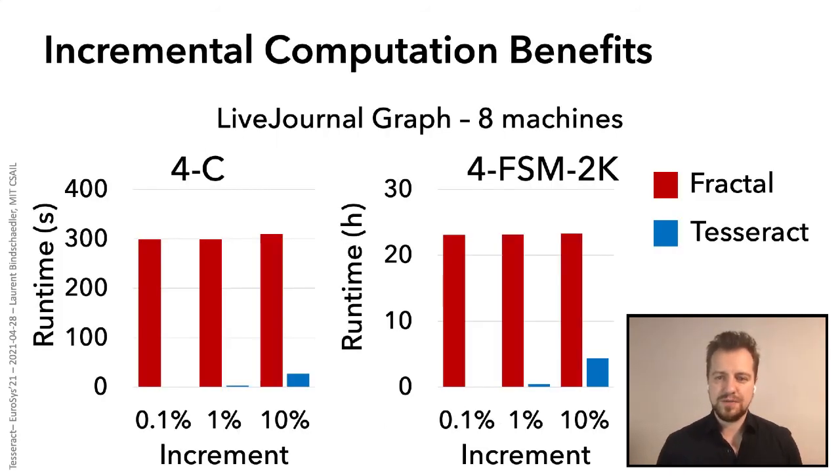So the result I want to show you here is the benefits that are achieved by incremental computation. So here we have the LiveJournal graph. We're running that on eight machines. This is a fairly reasonably sized graph. And we compare Fractal, which is a static mining system, with Tesseract. So in this case, we report for two algorithms, clique mining and frequent subgraph mining, how long it takes to process a graph with an additional 0.1%, 1%, and 10% of updates. In other words, the runtime here shows how long the system takes to compute the updated mining result. So Fractal, as a static mining system, must recompute the algorithm from scratch on the entire graph. And obviously, this can take a long time. Tesseract, on the other hand, simply computes the changes. And you can see that this provides very significant performance benefits. In particular, it allows us to provide fresh results or interactive results for graph mining.